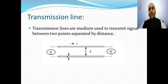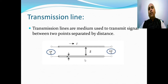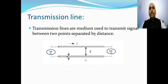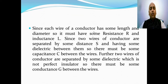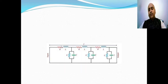For the purpose of analysis of this transmission line — to find input impedance, voltage, or current at any point — we need to model it in terms of resistance, inductance, capacitance, and conductance. Since each wire of the conductor has some length and diameter, it must have some resistance R and inductance L. So in series we have resistance R and inductance L.